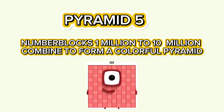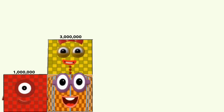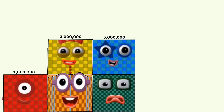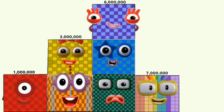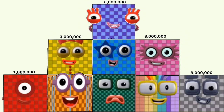Number blocks 1,000,000 to 10,000,000 combine to form a colorful pyramid. 1,000,000, 2,000,000, 3 million, 4 million, 5 million, 6 million, 7 million, 8 million, 9 million.